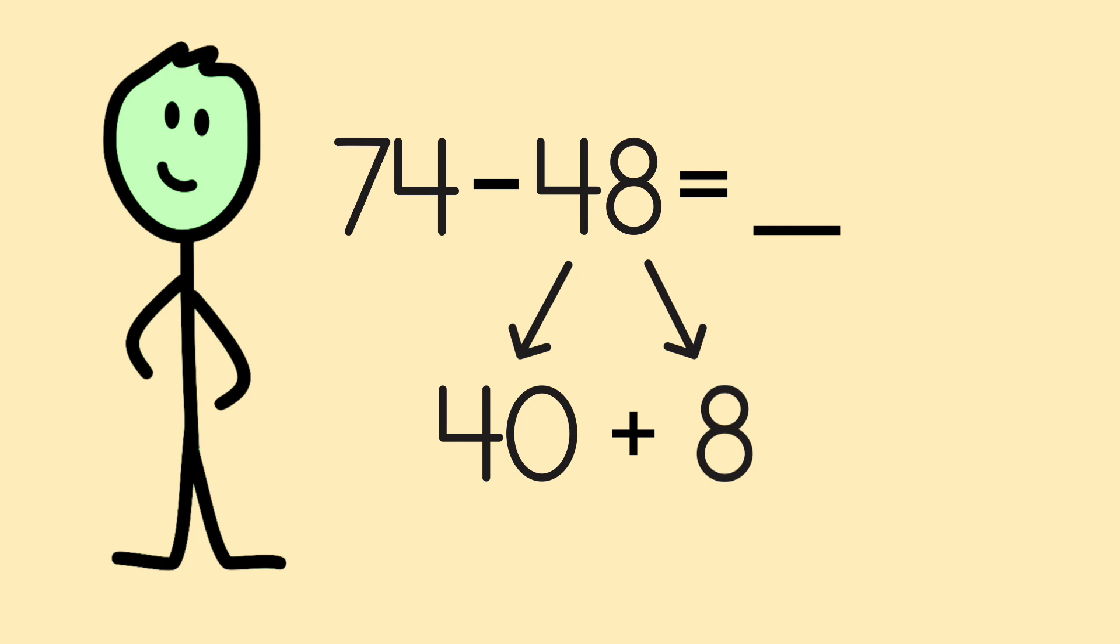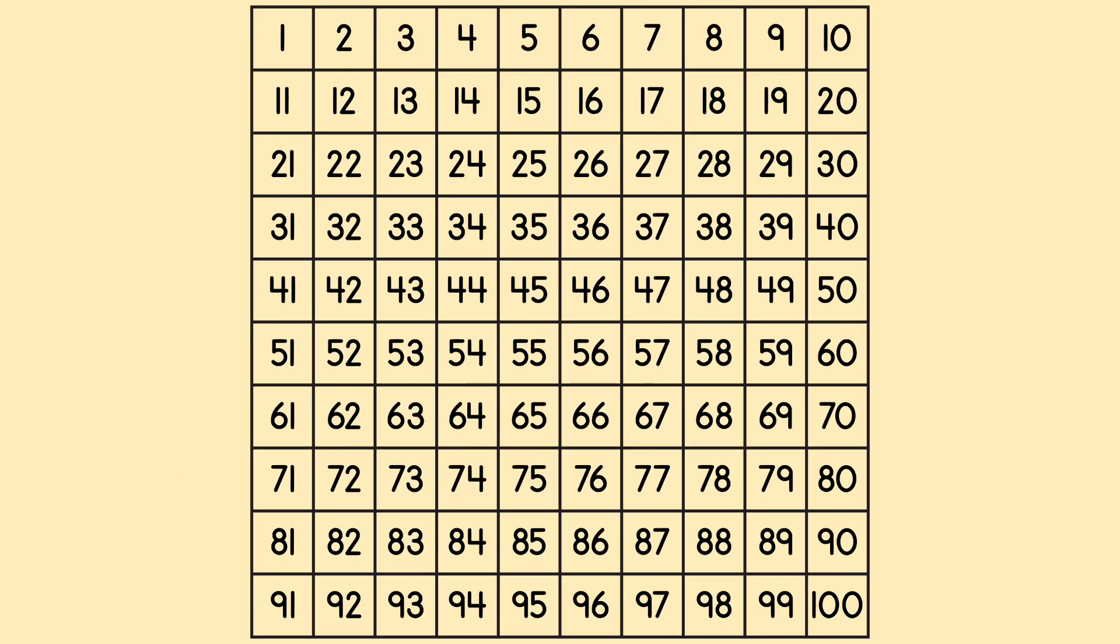So Kelvin again found 74 in the hundreds chart. Then he subtracted 40 by moving up 4 blocks above 74. 10, 20, 30, 40. He was now on 34.